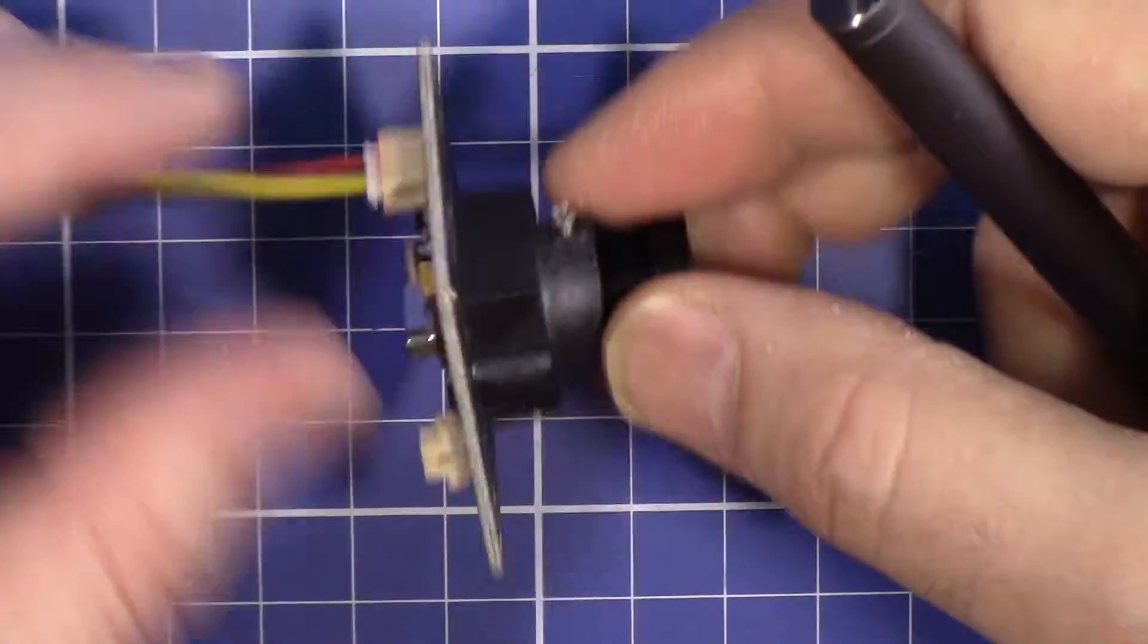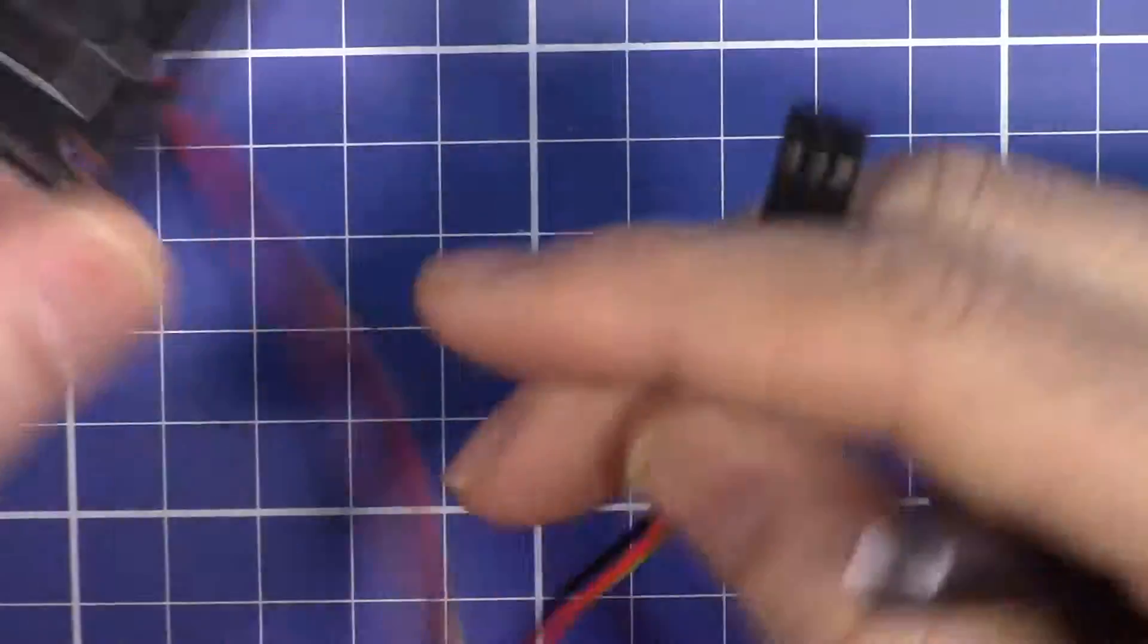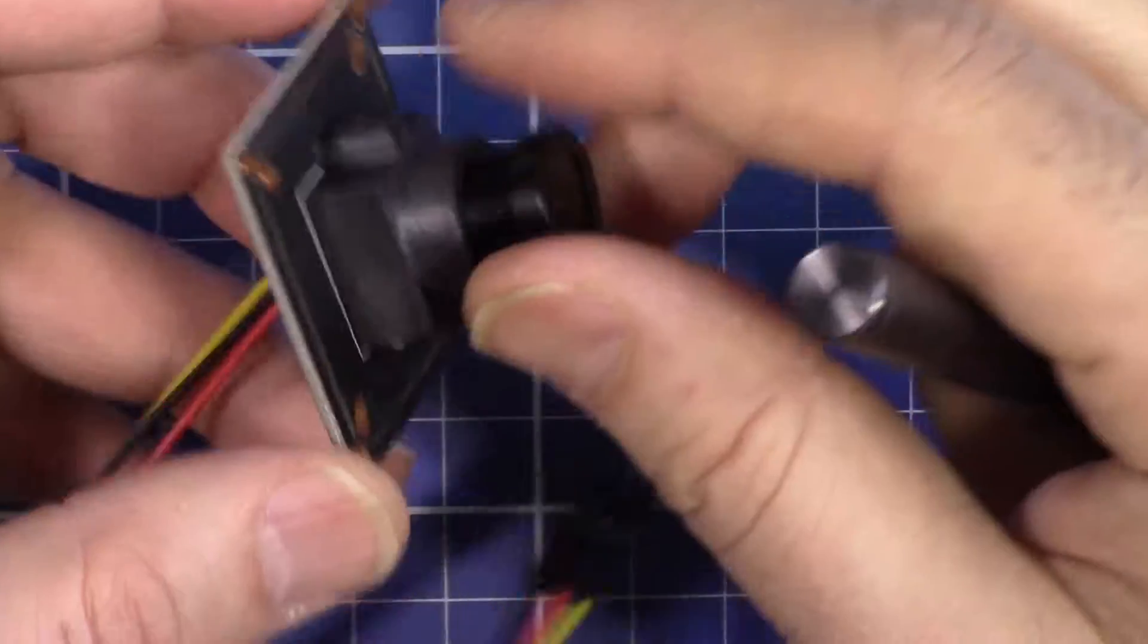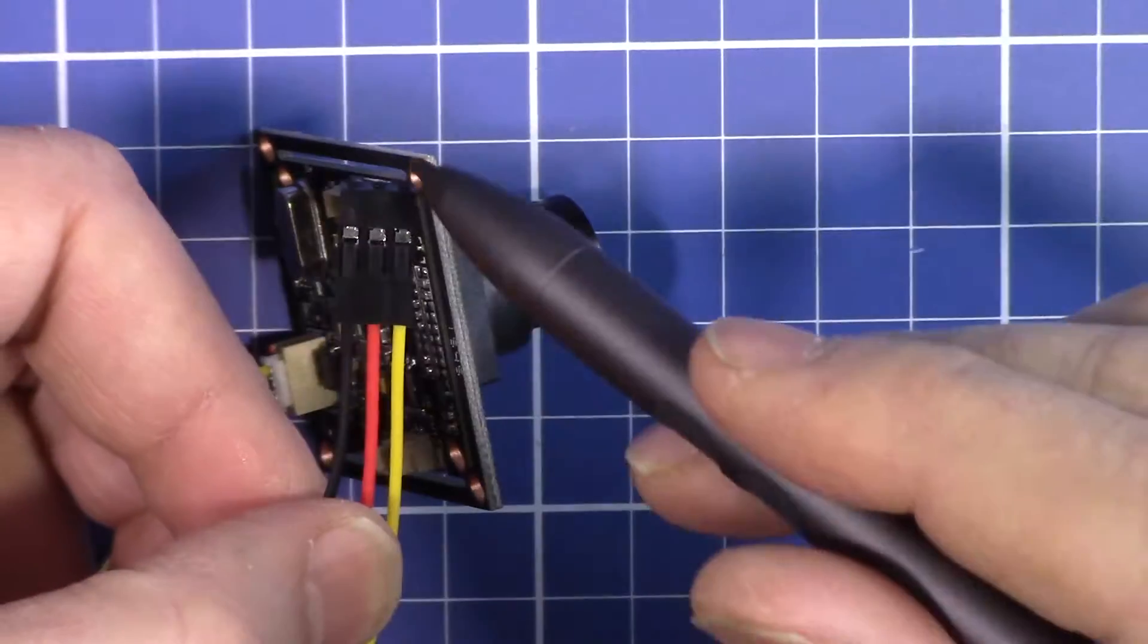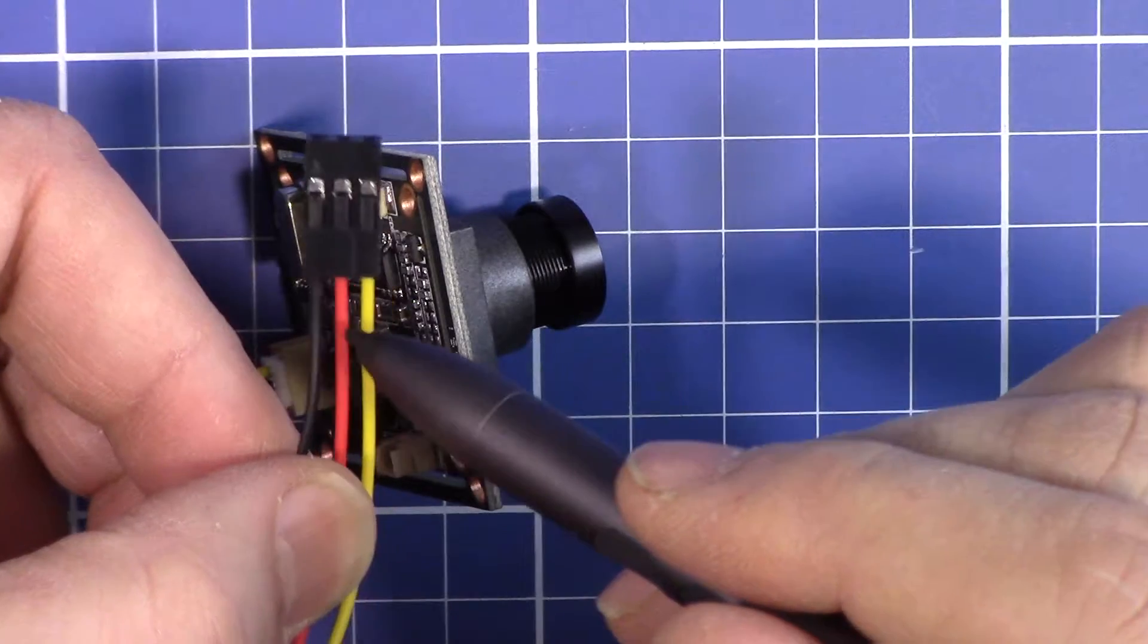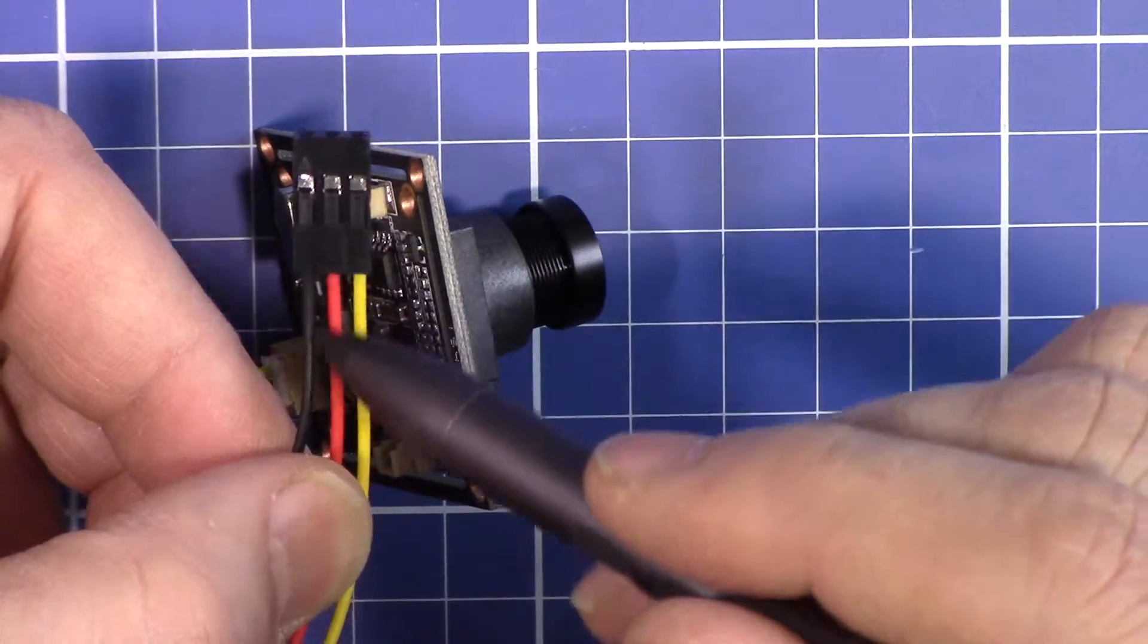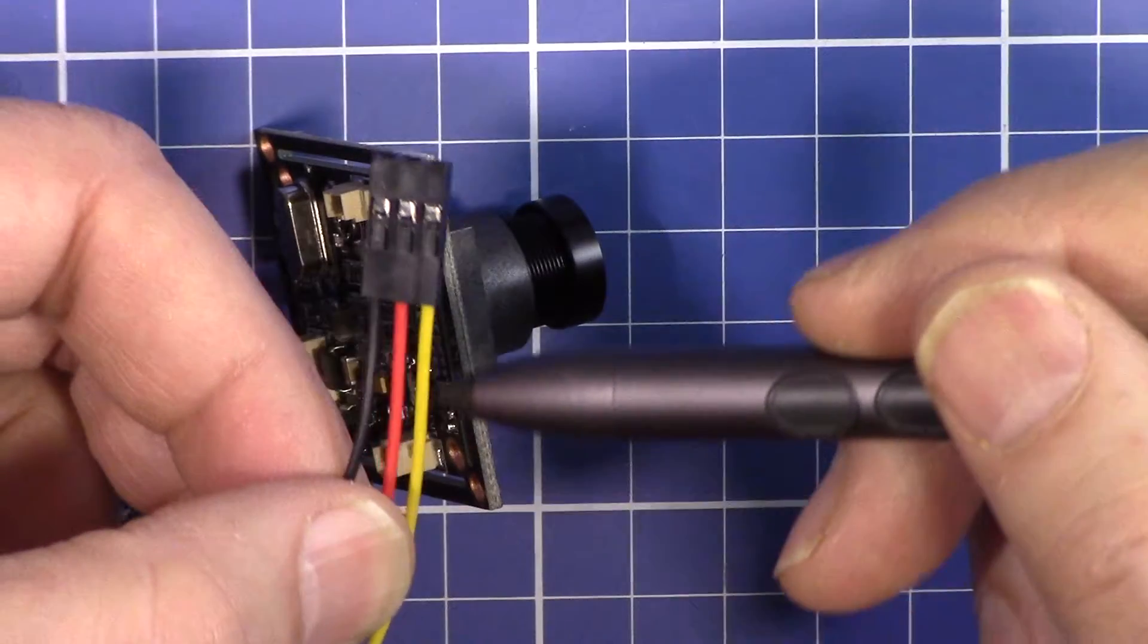It works with 12 volts, so you just connect here, positive and negative to 12 volts. This is an input and the yellow is the video out.